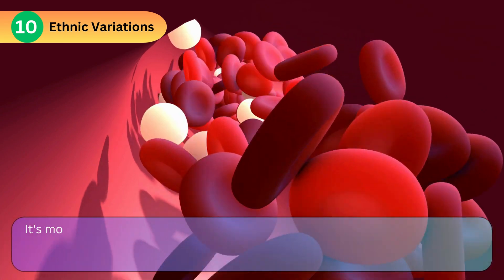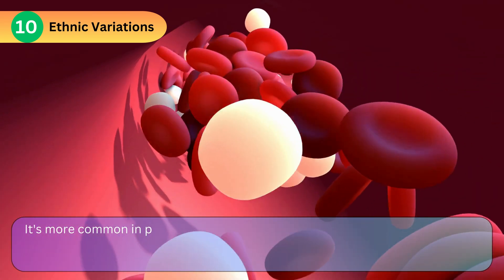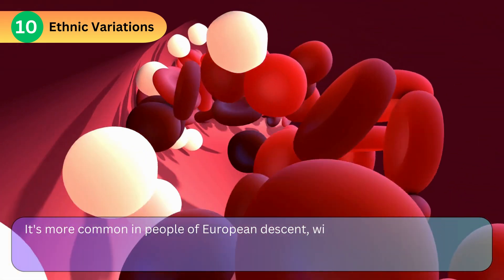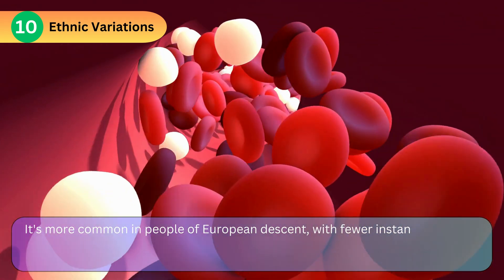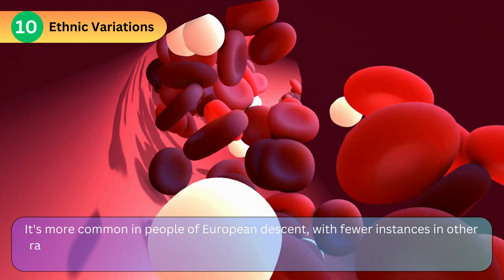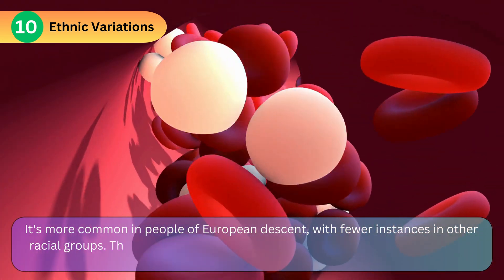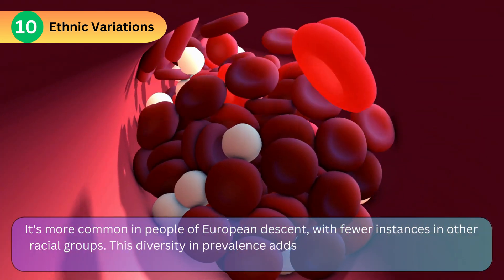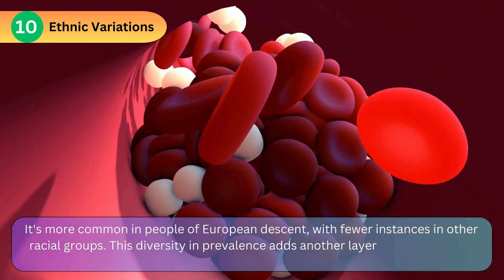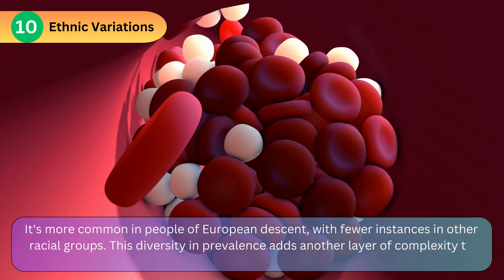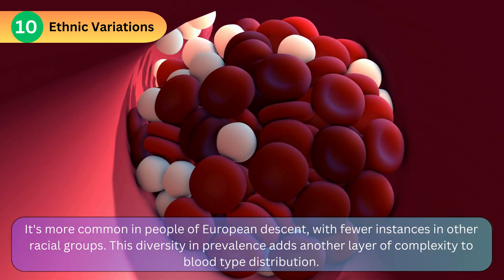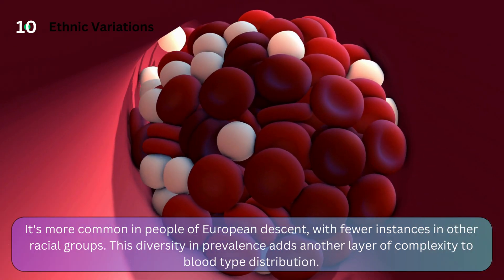Ethnic Variations: O negative is more common in people of European descent, with fewer instances in other racial groups. This diversity in prevalence adds another layer of complexity to blood type distribution.